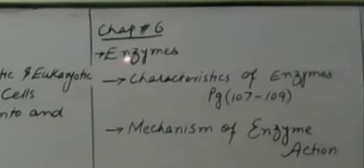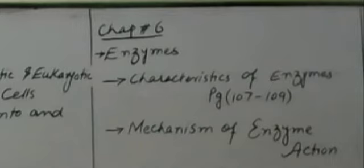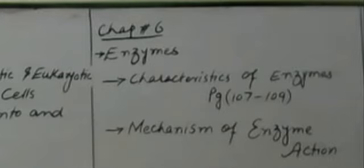Chapter number 6, which is included in R1-T2, is about enzymes. The topics given include characteristics of enzymes — there are seven characteristics. This is most probably the second topic. The pages given are 107 to 109. Page 107 is about enzymes.